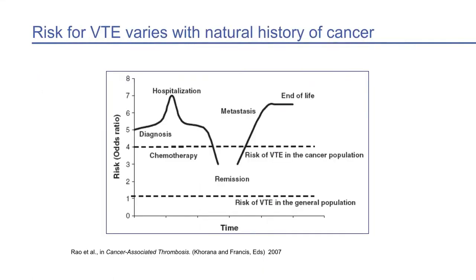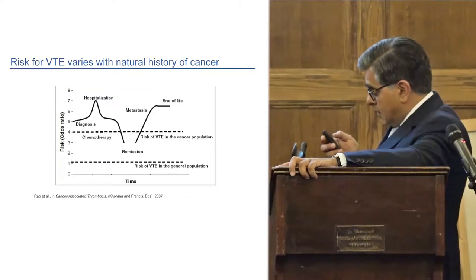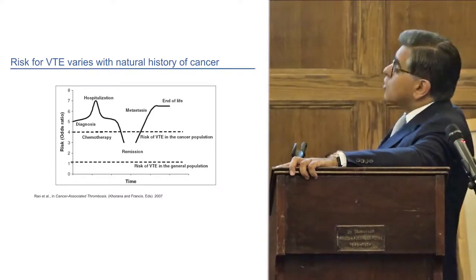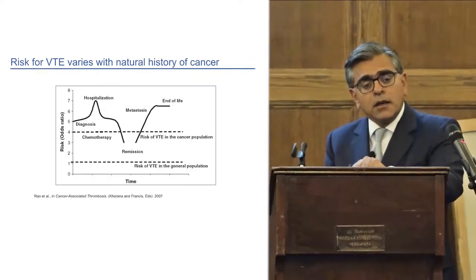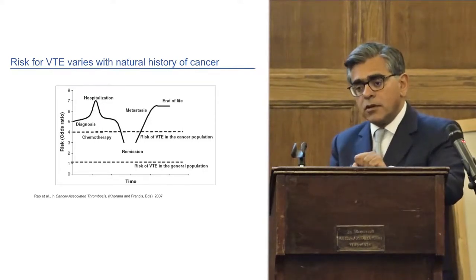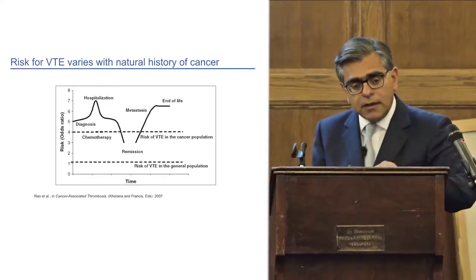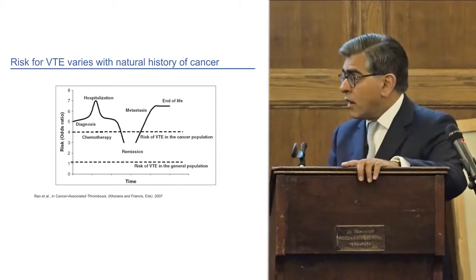With regard to the natural history of cancer, venous thromboembolism affects clinical outcome at different stages. At the time of diagnosis and presentation, patients with underlying malignant disease may present with a spontaneous thromboembolic episode. An area of considerable controversy is what one should do to those so-called idiopathic VTE patients with regard to screening for underlying malignant disease. The jury is still very much out on that.